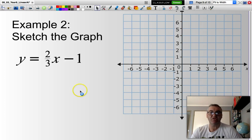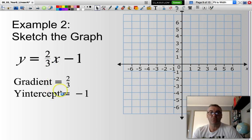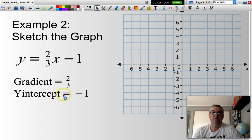Now, if I had to sketch a graph of y equals 2 thirds x minus 1, the first thing I need to do is identify my gradient and my y-intercept. So, my gradient is 2 thirds. It's the coefficient of x. And my y-intercept is negative 1.